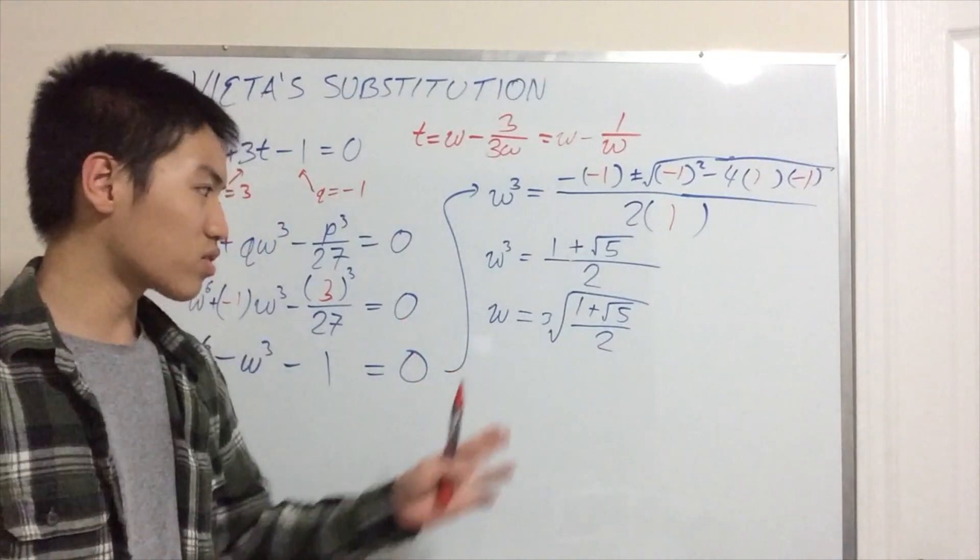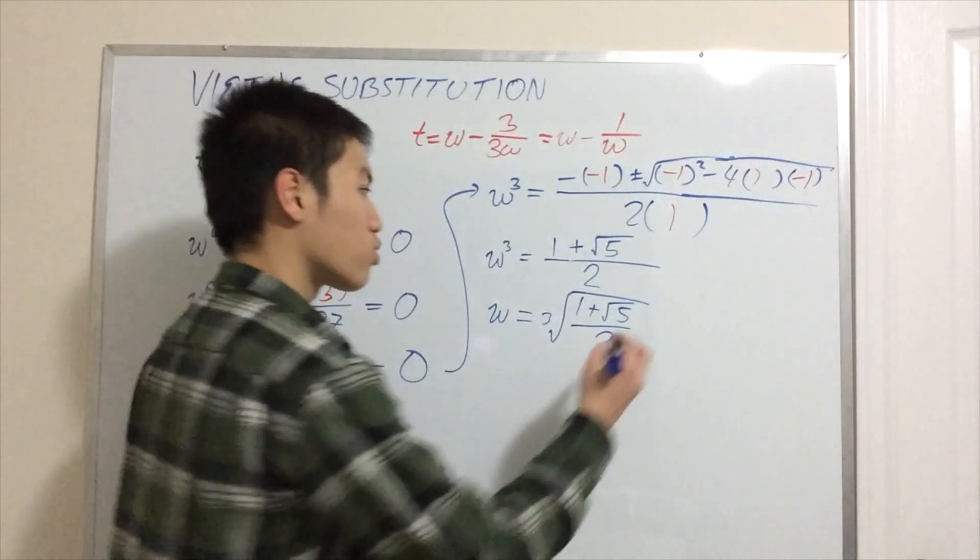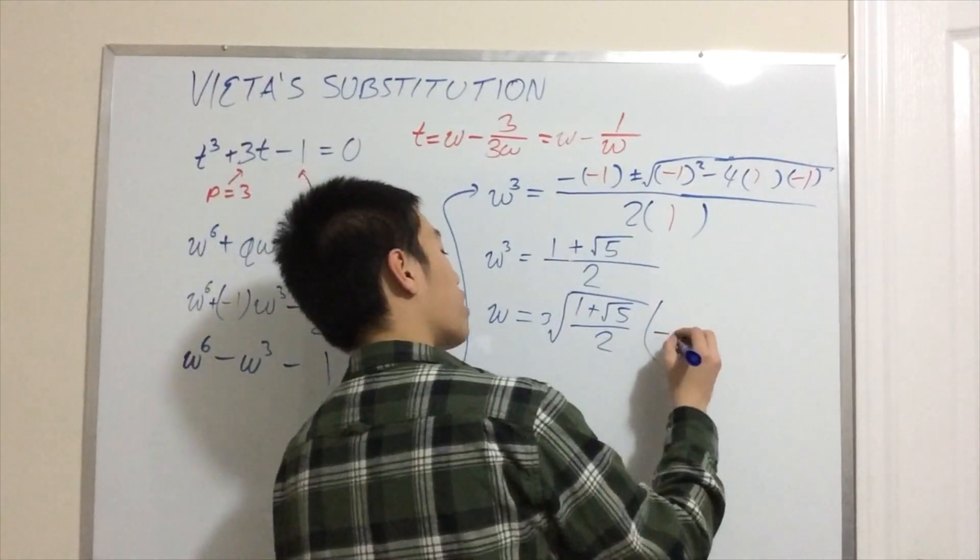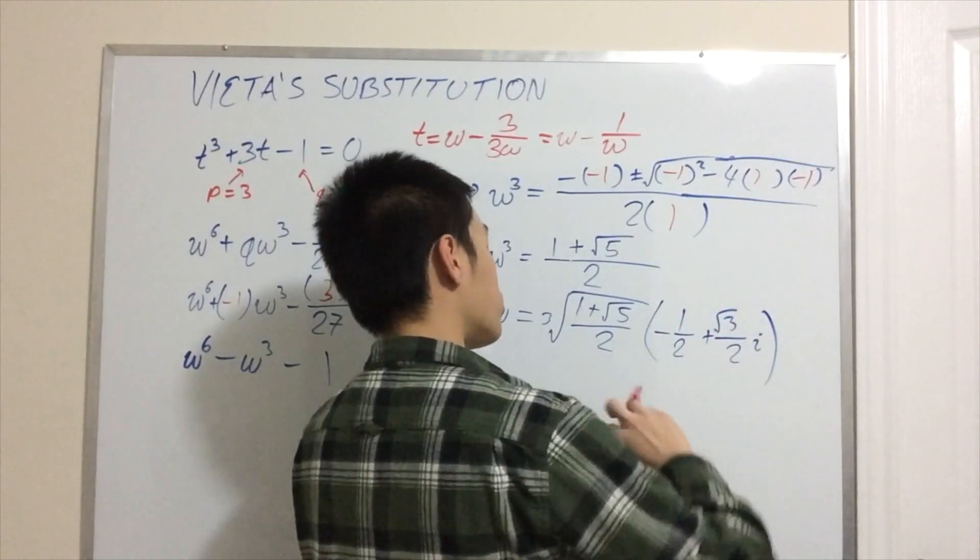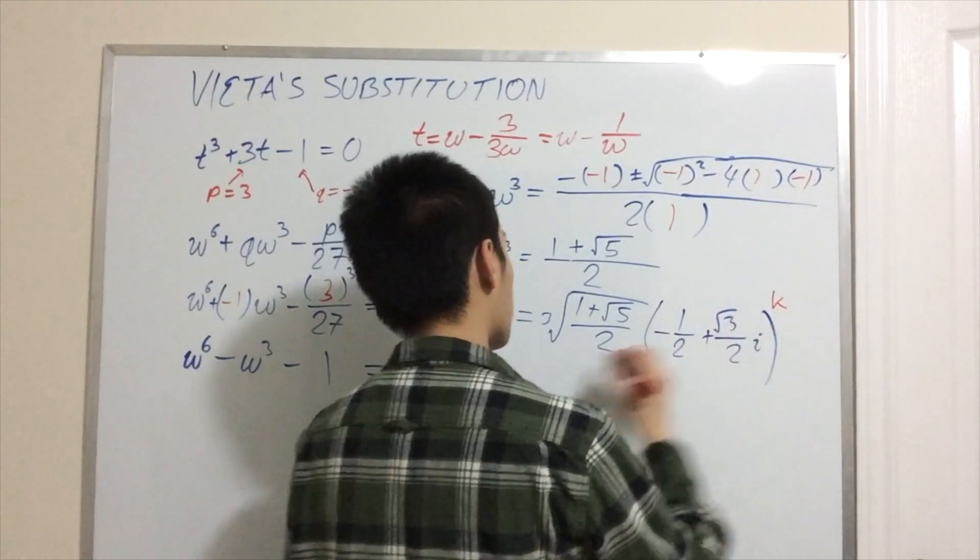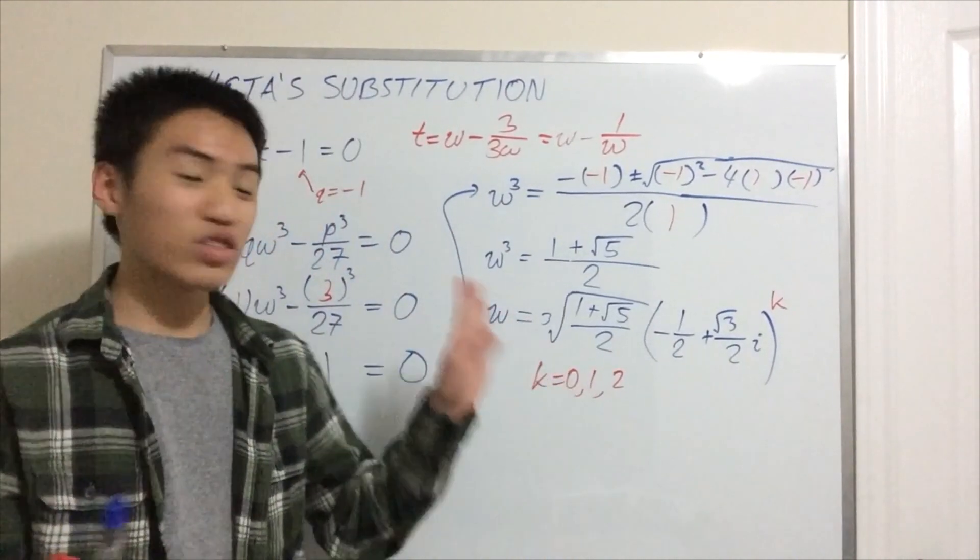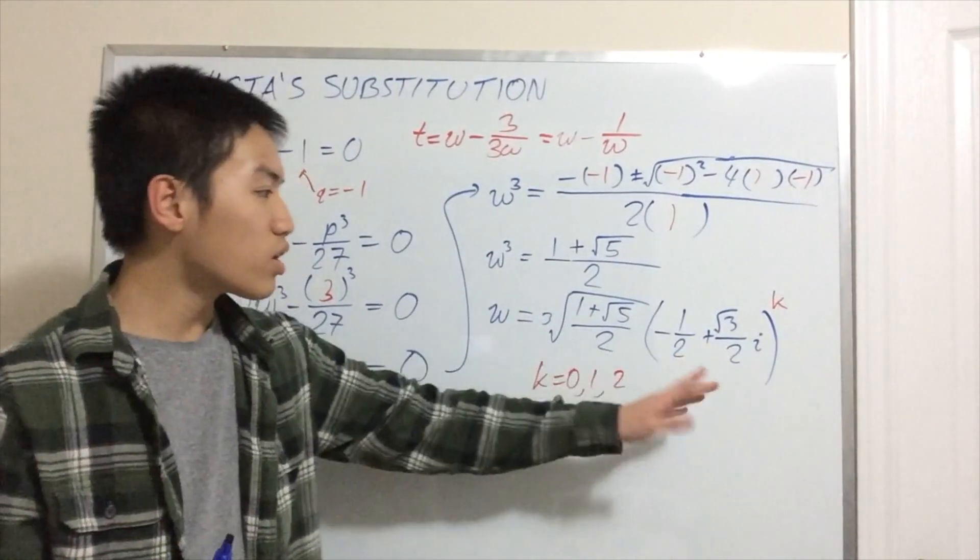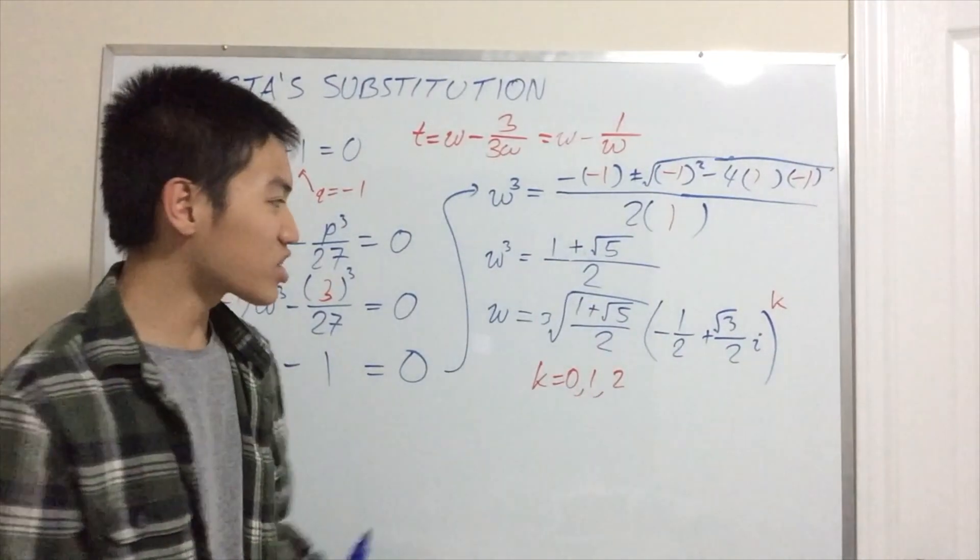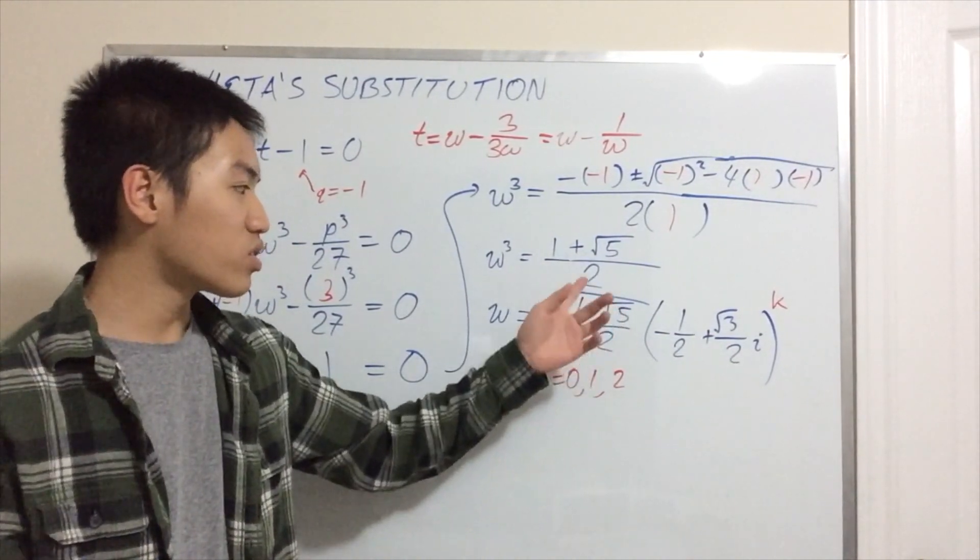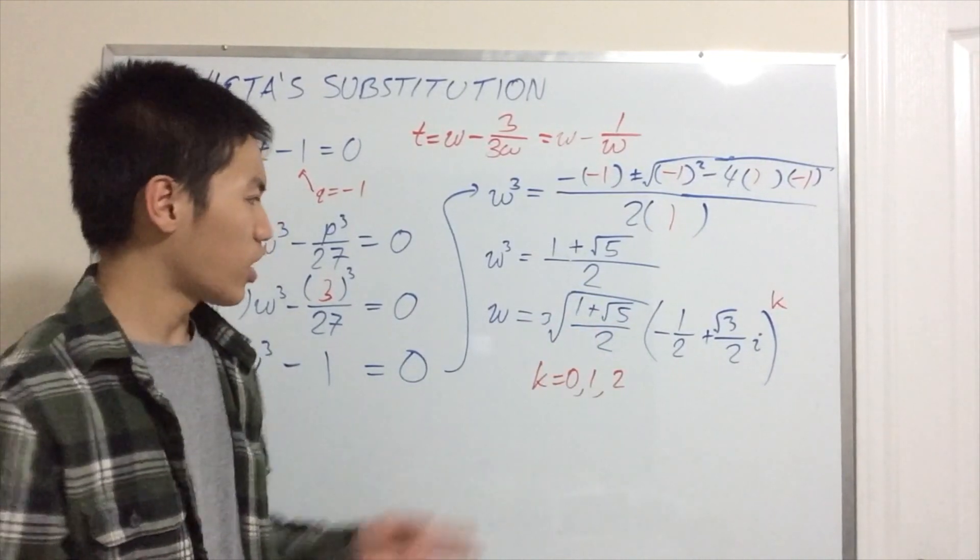So, I can say w is going to be ∛((1 + √5)/2). But there are two more cube roots that we're missing. This is what we call the principal cube root. And I'll just tell you, it's going to be (-1/2 + (√3/2)i)^k where k = 0, 1, and 2. And that's going to give us the three cube roots. You can check because when you cube this to the 0th power or this to the first power, this to the second power, you actually end up with 1. And we just have (1 + √5)/2. Check it for yourself. Turns out it's true.